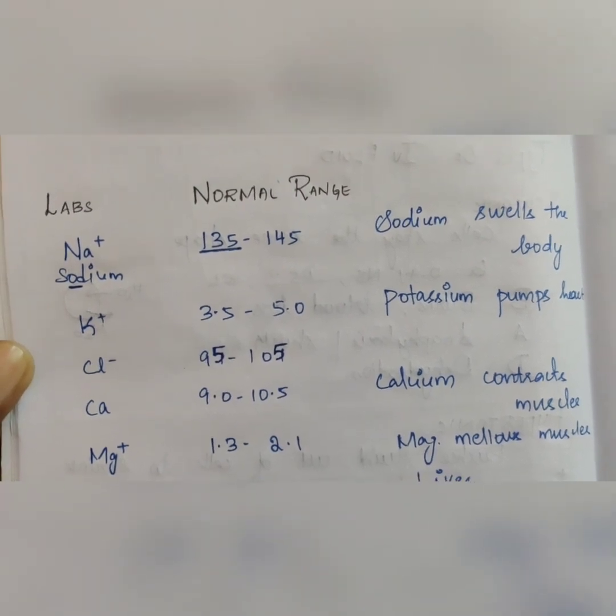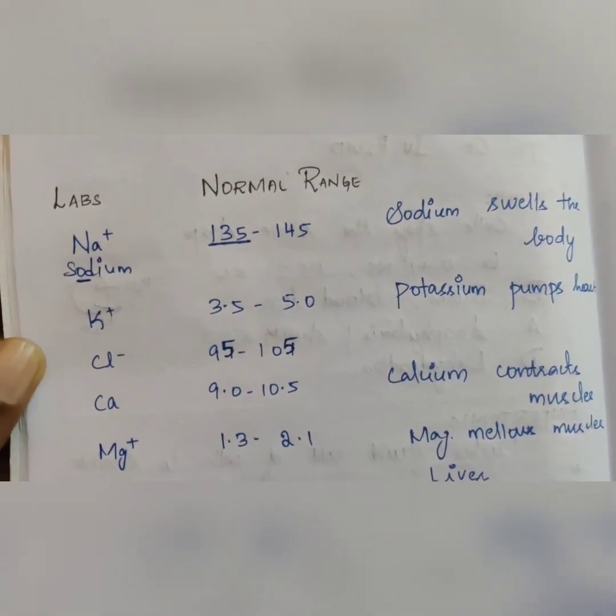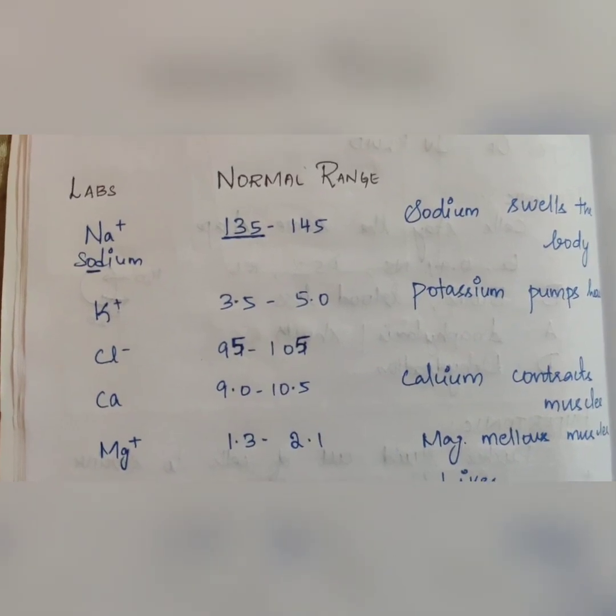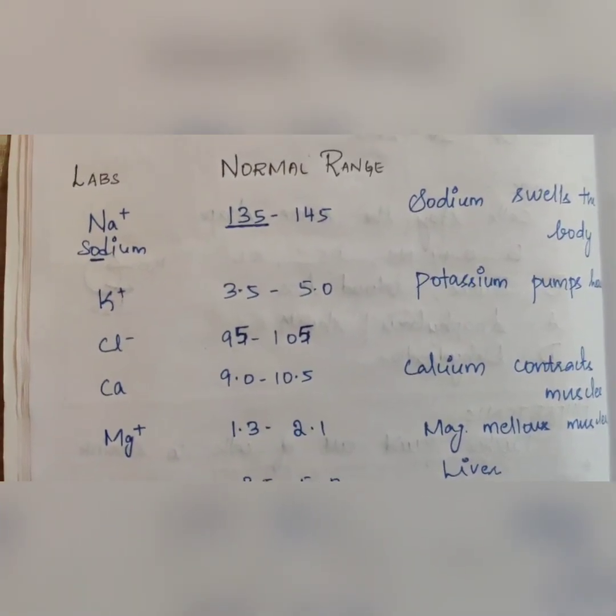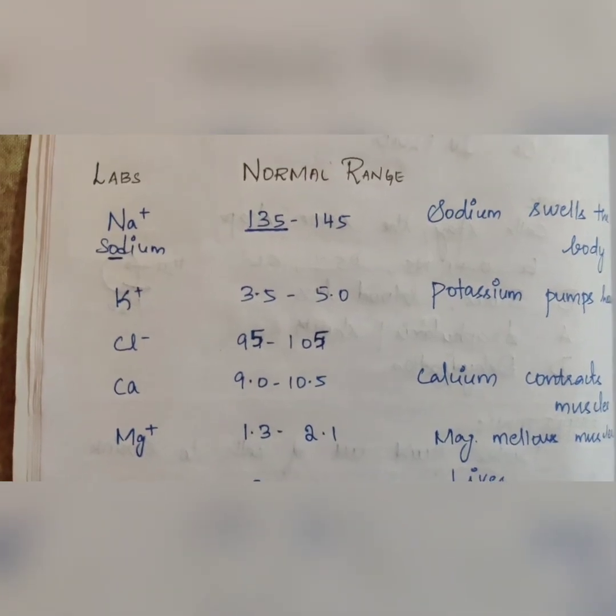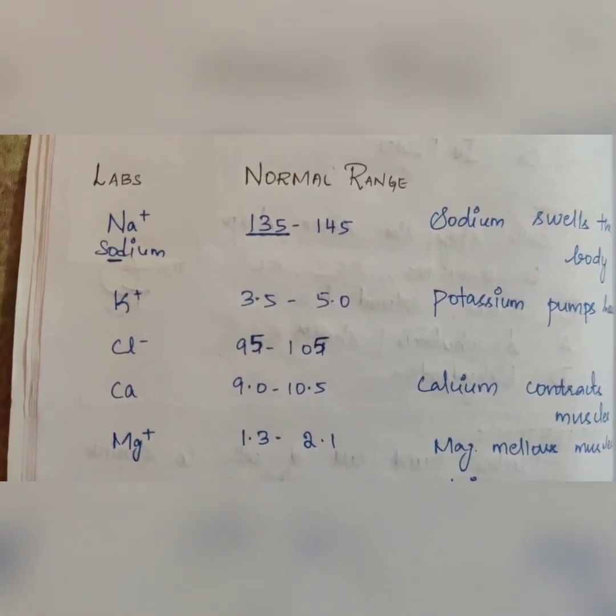Hi, how are we going to talk about some basic lab values? First, sodium. Sodium is Na. Sodium is 135 to 145 mEq per liter.